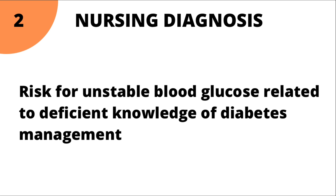Patients with diabetes mellitus lose a lot of weight and are generally tired because of their condition. The second diagnosis is risk for unstable blood glucose related to deficient knowledge of diabetes management. This is a risk diagnosis because the problem hasn't happened yet — even though blood glucose is elevated, there is a chance it will become unstable because the patient doesn't know much about managing diabetes.